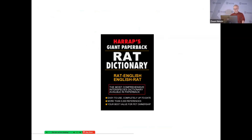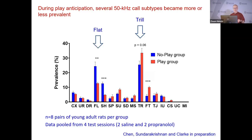We haven't quite got to producing a rat-English dictionary yet. I think we're just scraping the surface — there's a whole lot going on. I've only talked about call subtypes; we haven't analyzed acoustic properties of the calls the way some other people have done. There are many different ways to analyze these data. Some of our data are now deposited online so people can mine it if they so desire.